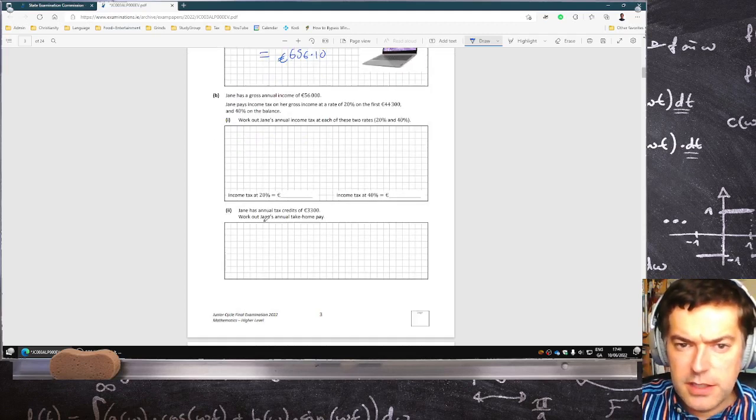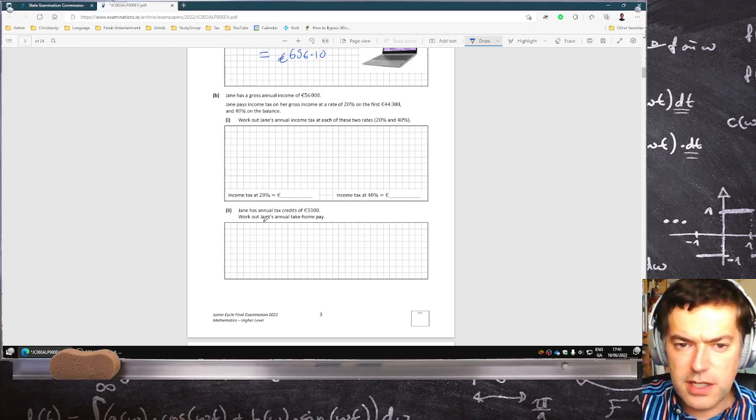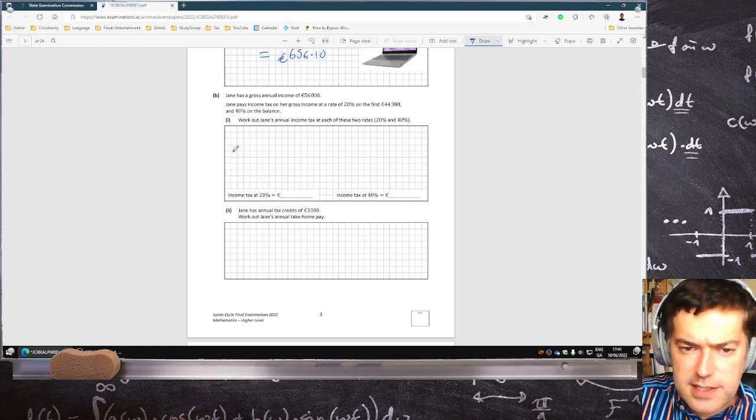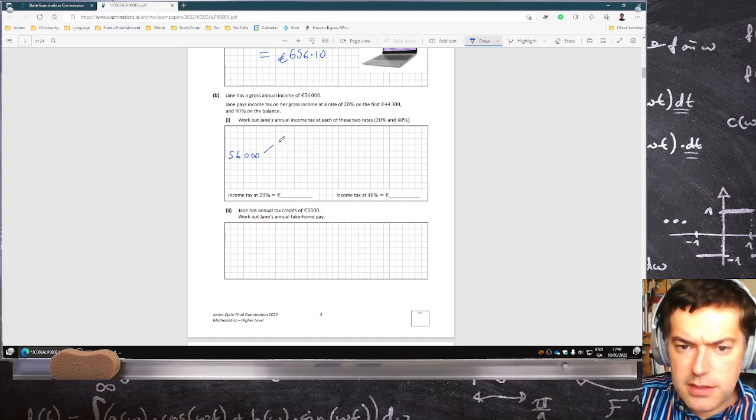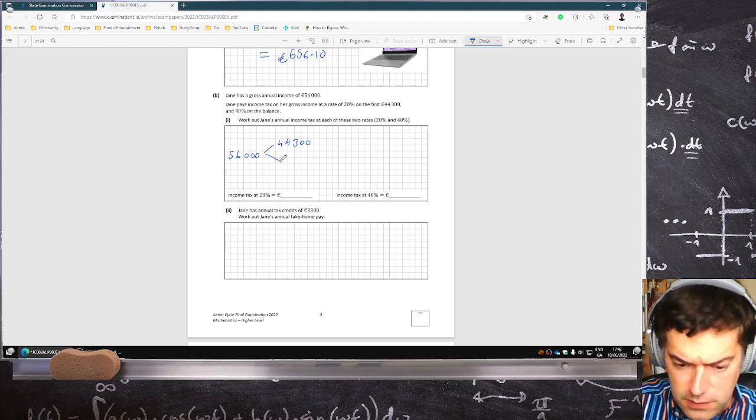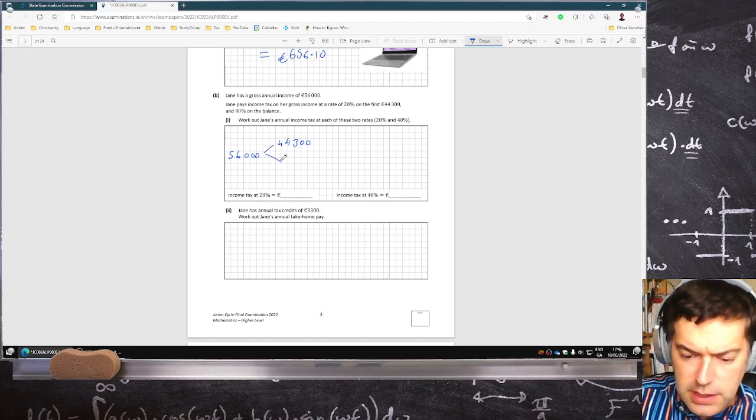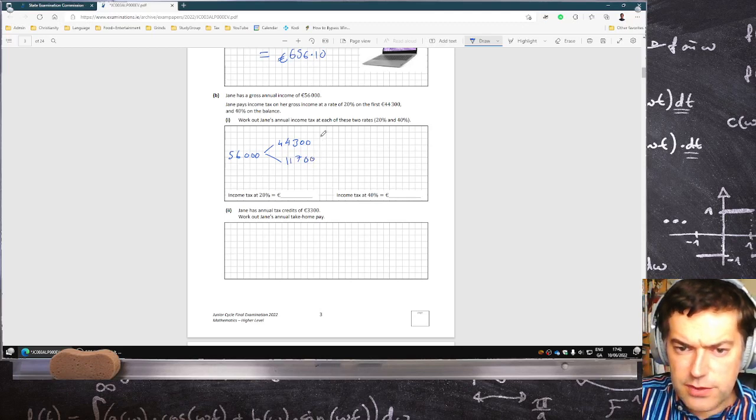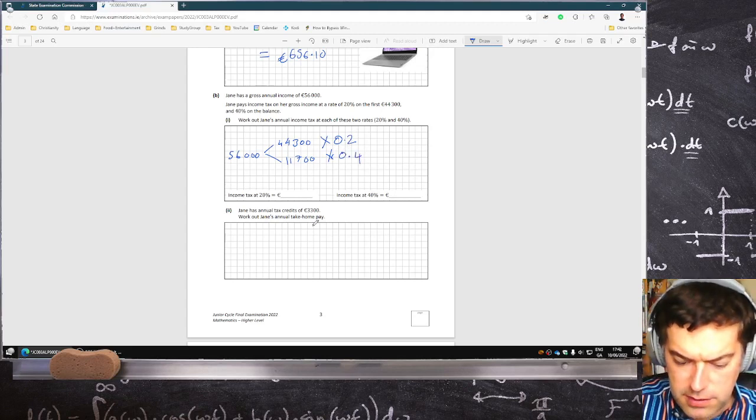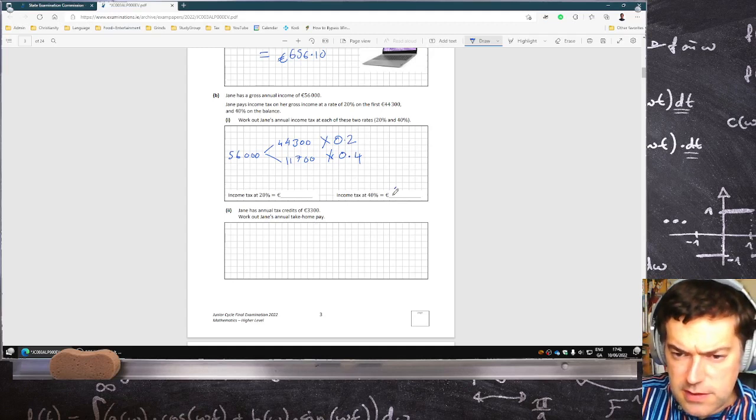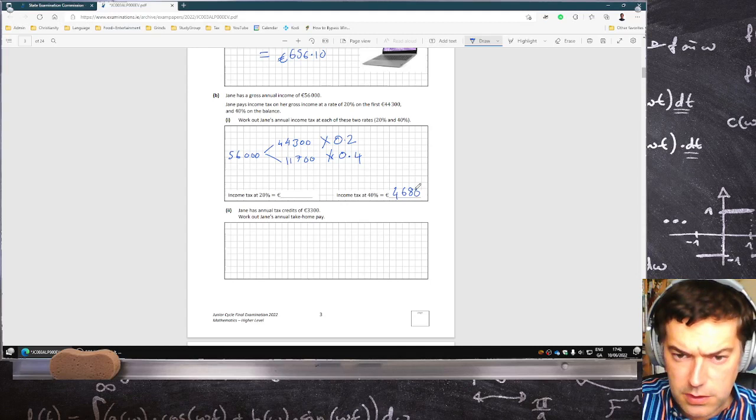Jane has a gross annual income of $56,000. Jane pays income tax at 20% on the first $44,300 and 40% on the balance. Work out Jane's annual income tax on each of these two rates. Okay, well, so the $56,000 has to be split into $44,300 and then $11,700. And that's at 20%. And that's at 40%. So that's $8,860 and that's $4,680.